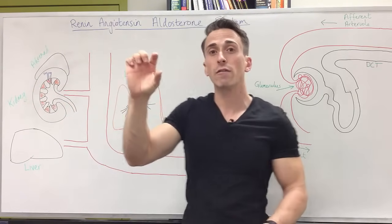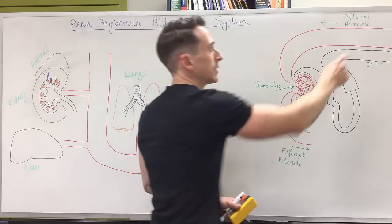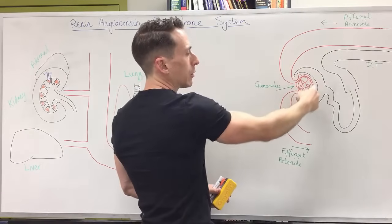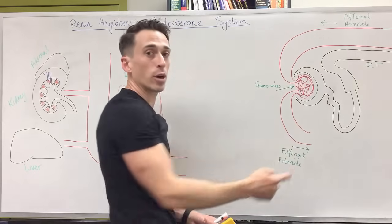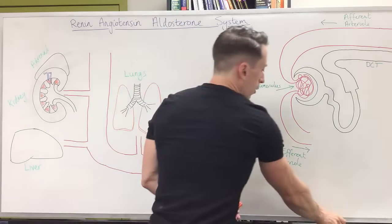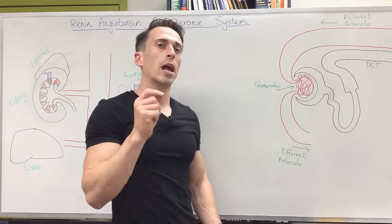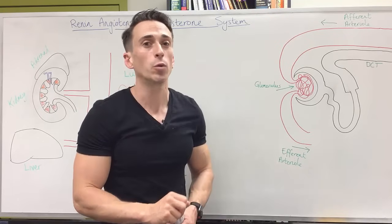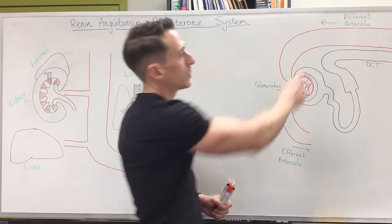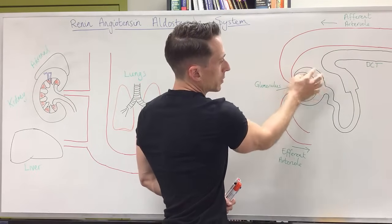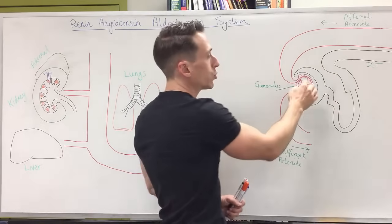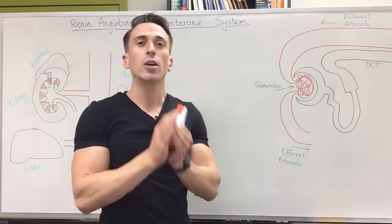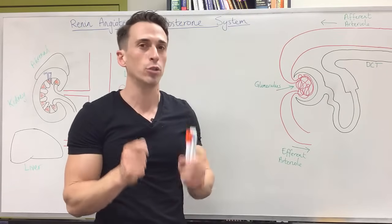If we take a single nephron out, there's an afferent arteriole — blood coming in — which turns into a capillary network called the glomerulus, then an efferent arteriole coming out. The kidneys need to filter about 120 millilitres of blood per minute, creating 120 millilitres of filtrate per minute. That means about 180 litres per day of filtrate is produced.